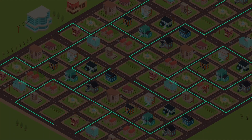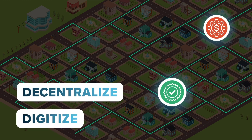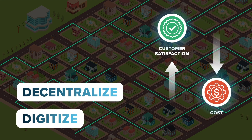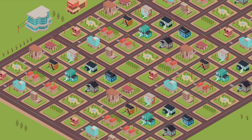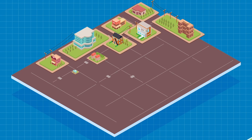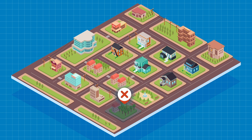The power grid is changing. Utilities have begun to decentralize and digitize, to meet high reliability metrics and minimize outage times when faults do occur. By decentralizing power distribution networks into smaller grids, you can better detect and isolate faults within specific areas. Power can then be rerouted from adjacent circuits to restore service to customers quickly.